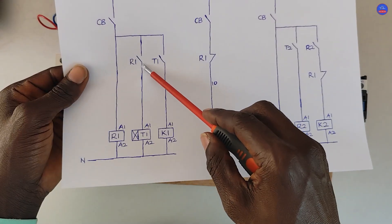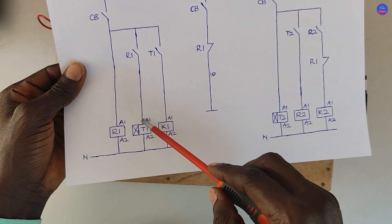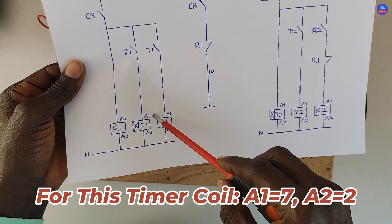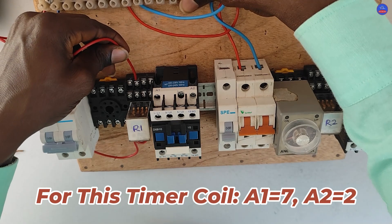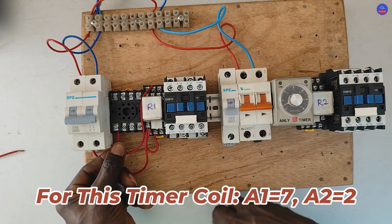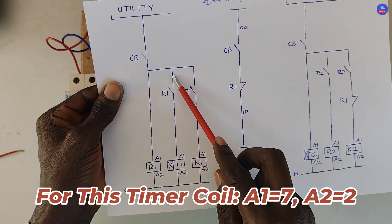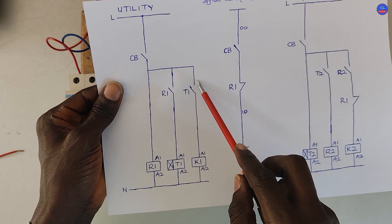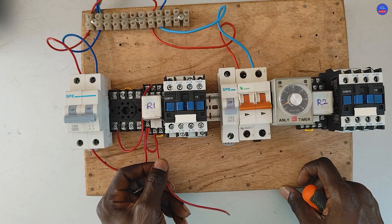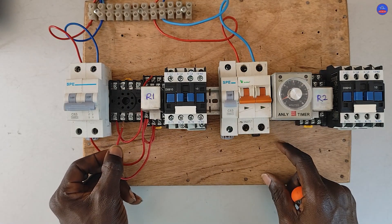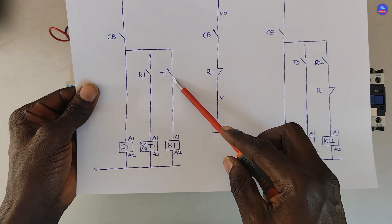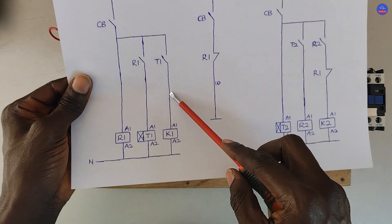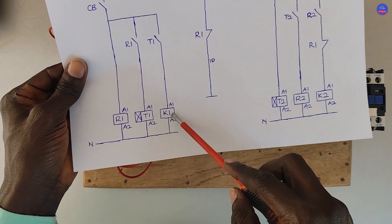From the other side of the contact, it connects to terminal A1 on the timer — this terminal A1 is terminal 7. We tap from the relay other side to the common terminal of this timer, which is terminal 8. From the other side of the open contact, that is terminal 6, it goes to terminal A1 on K1.